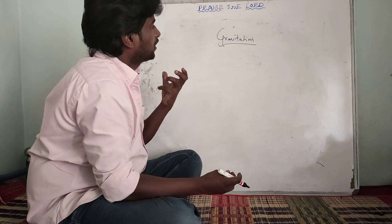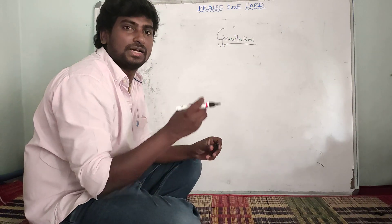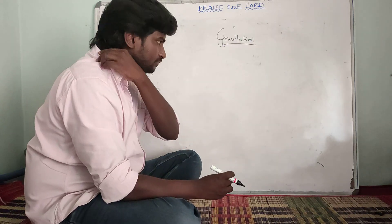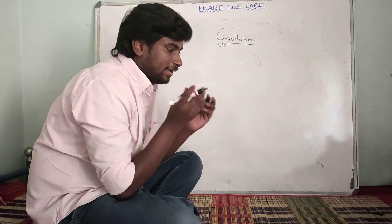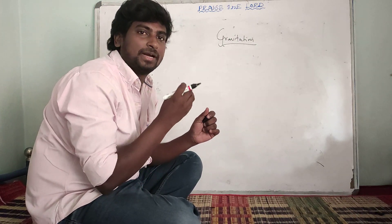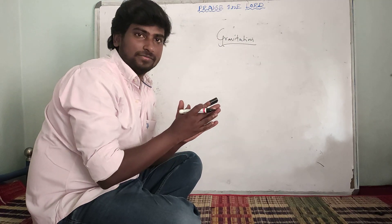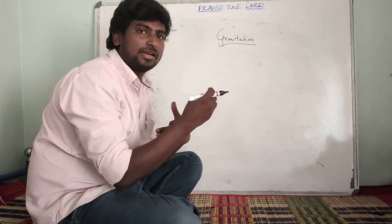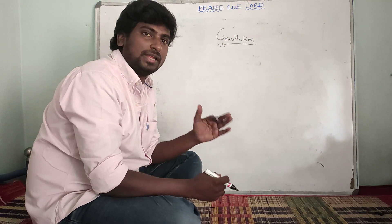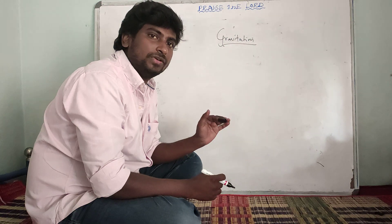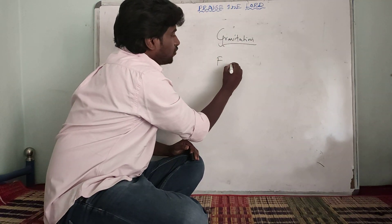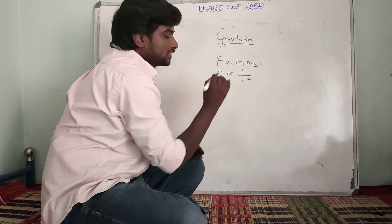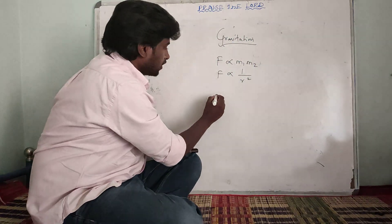In the previous class, we learned that Newton's gravitational law is very important. Newton's universal gravitational law states: every particle in the universe attracts every other particle with a force that is directly proportional to the product of the masses and inversely proportional to the square of the distance between them.